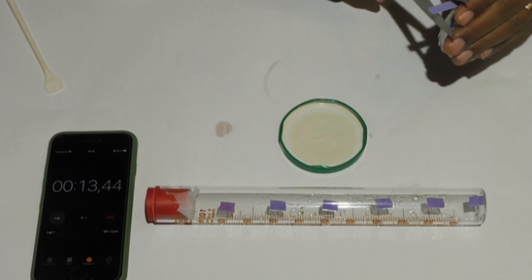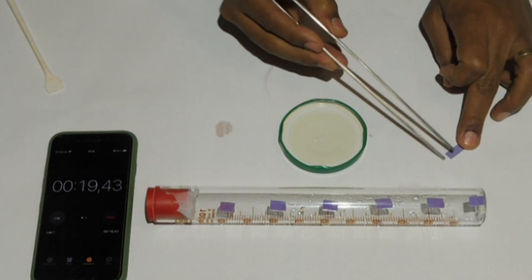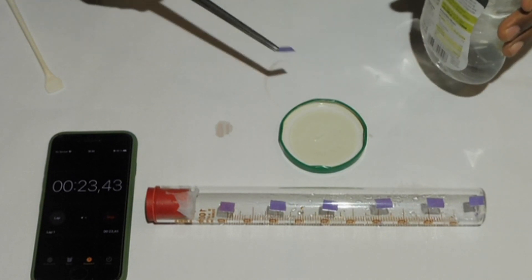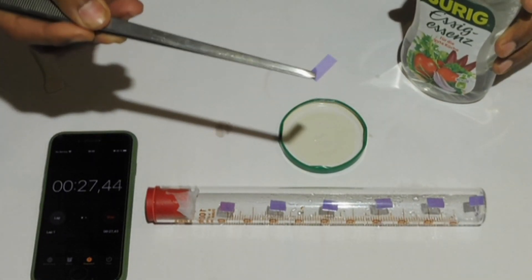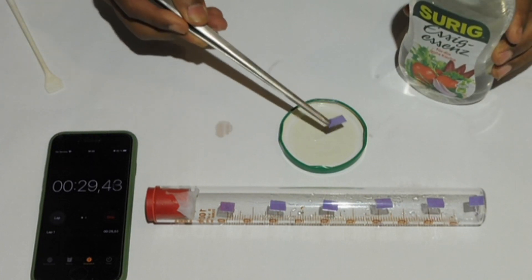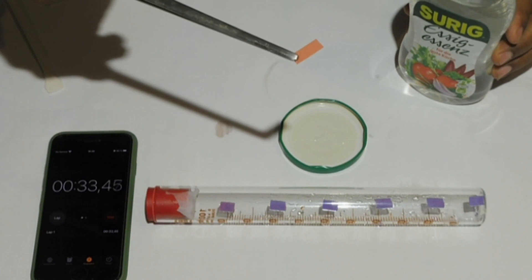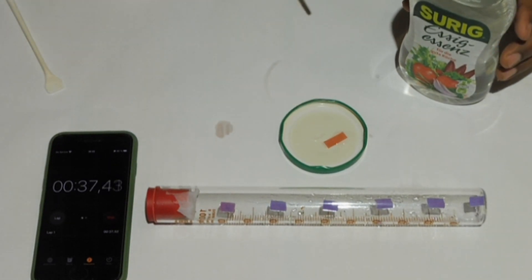While the time is counting, I will demonstrate what observation I am expecting from the litmus paper. I will take a small piece of blue litmus paper and dip it into vinegar. As you can see, the blue litmus paper changed to red when in contact with an acid. This is one way for testing acids.